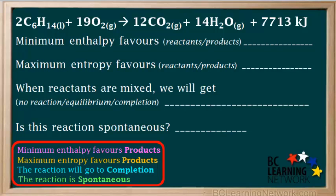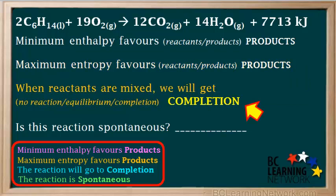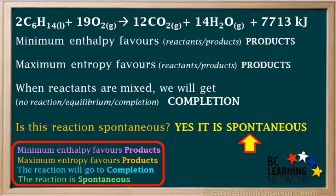Now we can summarize by answering all the original questions. The tendency toward minimum enthalpy favors the products, and the tendency toward maximum entropy also favors the products. When reactants are mixed, this reaction will go to completion — this is a combustion reaction and we're assuming we're supplying the necessary activation energy to start the reaction. Lastly, we can state that this reaction is spontaneous, assuming the necessary activation energy is supplied.